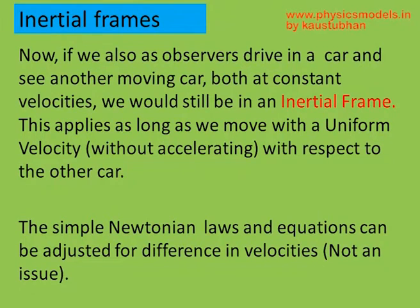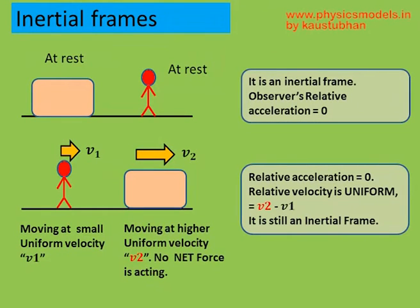Let's look at a sketch. On the top, we have a box at rest and an observer looking at the box. Both are at rest and the ground on which they are standing is assumed to be stationary — not rotating with the surface of the earth or moving around the sun. Therefore, that's an inertial frame of reference.